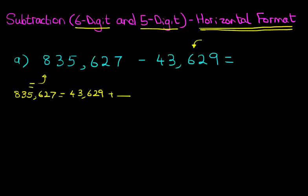As always, we're going to start with the units. How many units do we have? We've got 9. Our target is to get to 7. Now the next number with 7 units is 17. So what number added to the 9 is going to give us 17? The answer is 8. 9 plus 8 equals 17, and because it's 17, we're carrying 1 over.